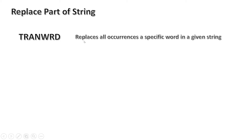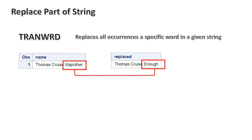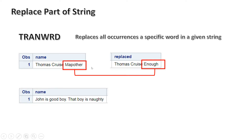The definition of TRANWRD says it replaces all occurrences of a specific word in a given string. For example, if you have a string like 'Thomas Cruz map author' and you want to replace 'map author' and make it 'Thomas Cruz enough', you can use TRANWRD. This 'map author' part will be changed to 'enough'. It replaces all occurrences, so if you have more than one instance in one string variable, it will replace all of them.